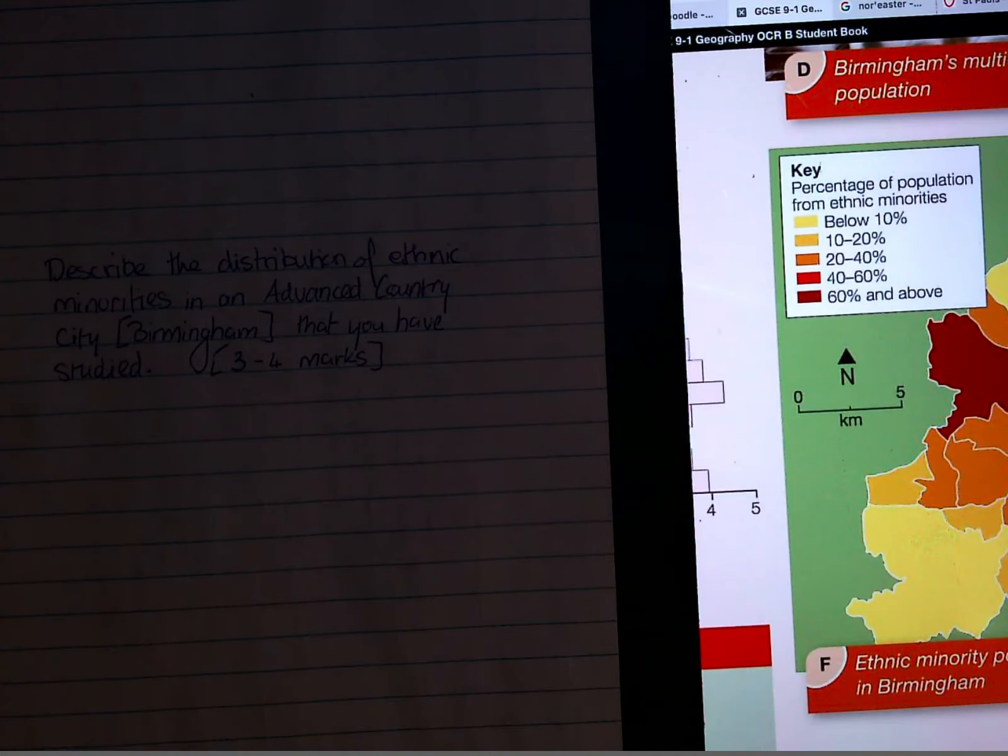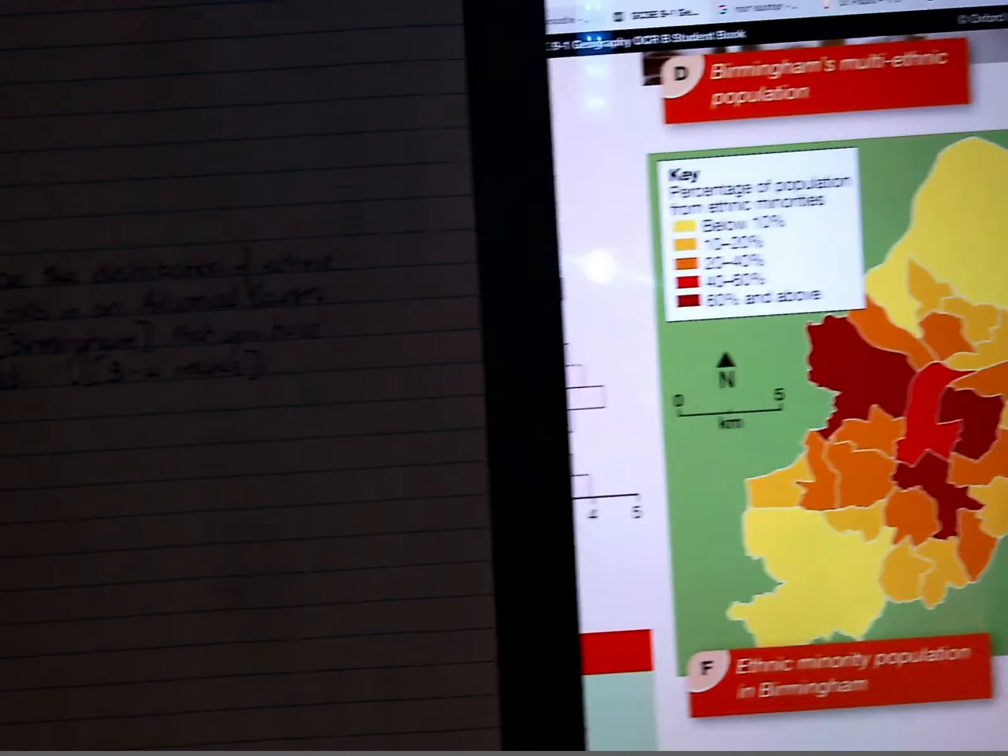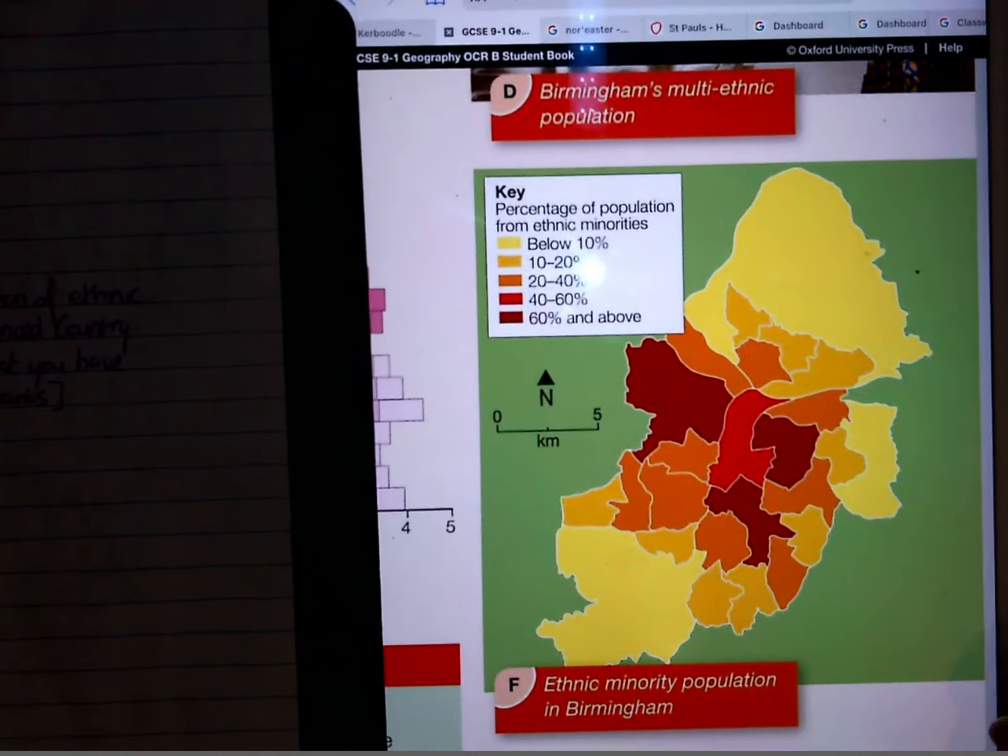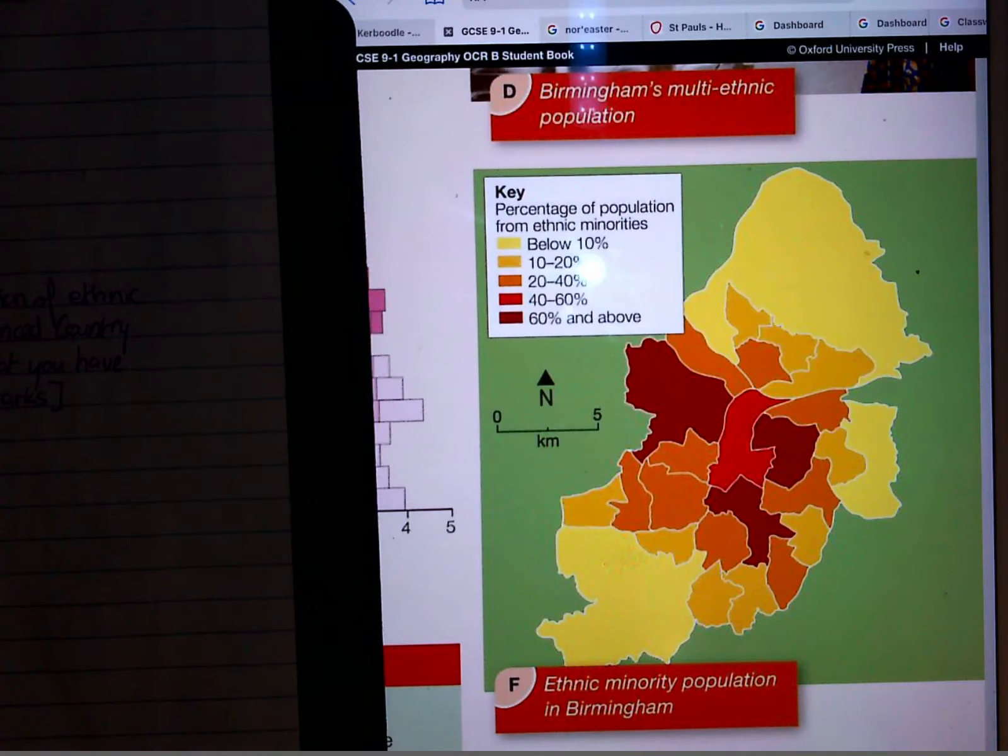Hello Year 9, I've got another video for you as requested by many of you and it's on this map here, the Birmingham Ethnic Minority Distribution of Population Map and I think one that people have been struggling with a little bit in terms of how do I answer a question that asks me to describe distribution of something on a map.